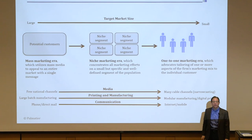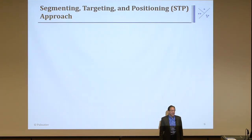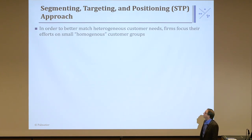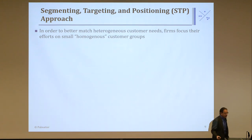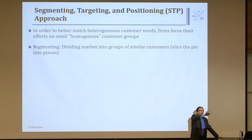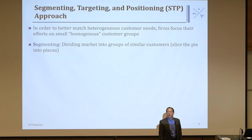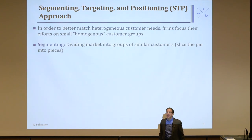So how do we deal with this? Going from mass to niche to one-to-one, we were segmenting smaller and smaller. We'll go through a process called Segmentation, Targeting, and Positioning — abbreviated STP. It allows us to match a firm's offering to an individual segment's needs. The first part, Segmenting, is dividing customers into slices of pie. Looking at the automotive market: we group people by their desires and needs — minivan people, truck people, sports car people, family sedans.